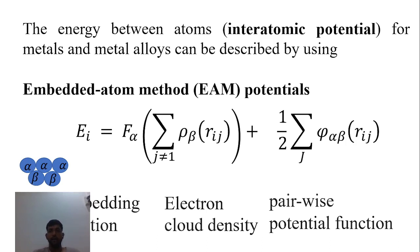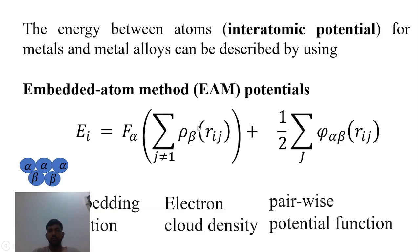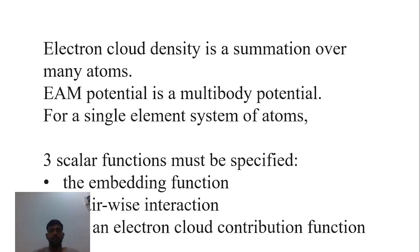Electron cloud density is also called multi-body potential because it's a summation term. We are not just considering the interaction between two atoms, which would be the case for Lennard-Jones two-body potential. For a single element system, we need just three scalar functions.